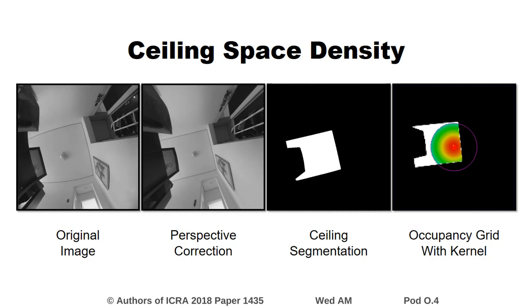We then convert it to an occupancy grid and apply the same operation to find the ceiling space density. Note that even if the ceiling was partially occluded, it won't affect the result since the occlusion is outside of the kernel radius.